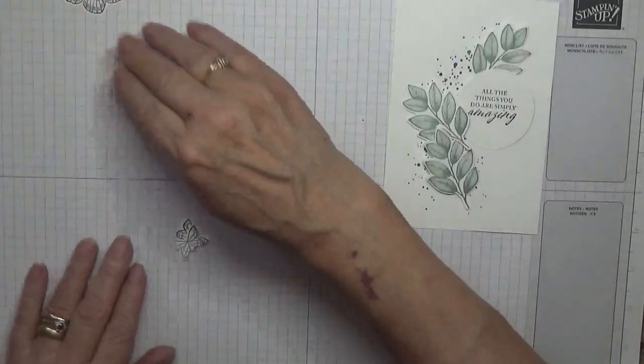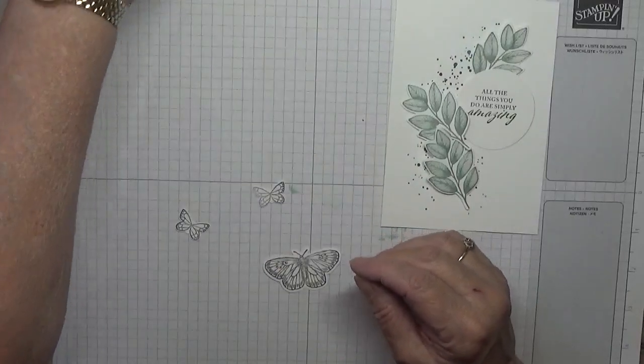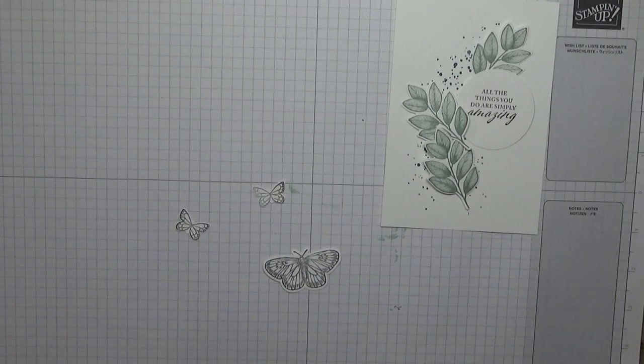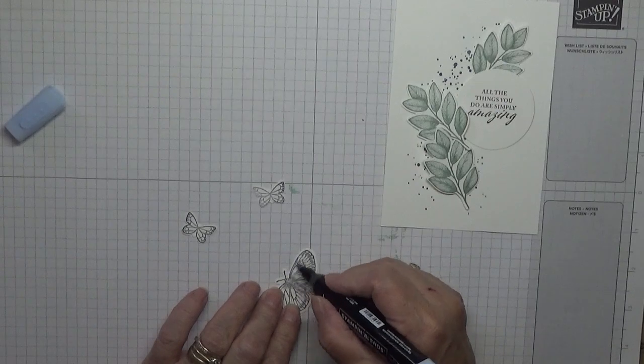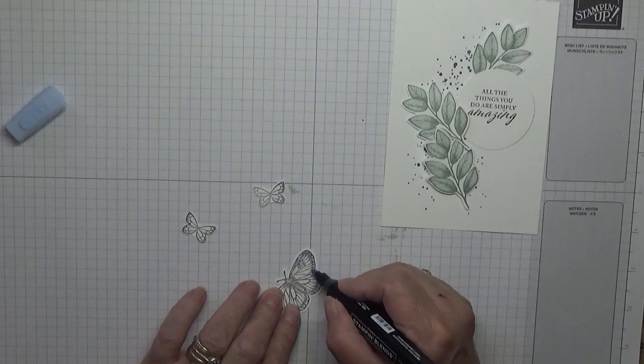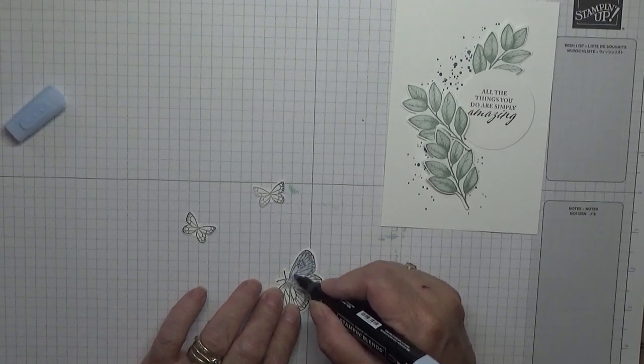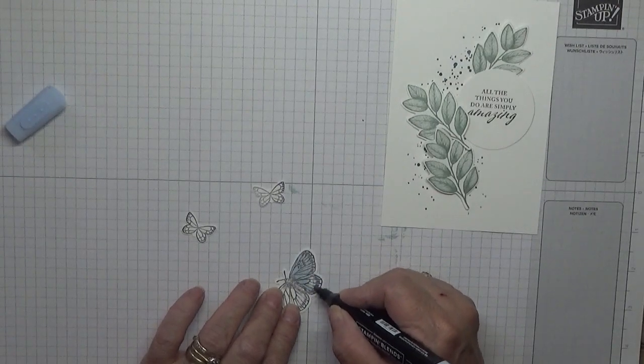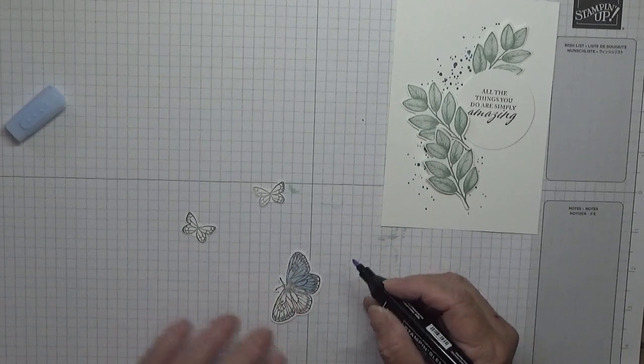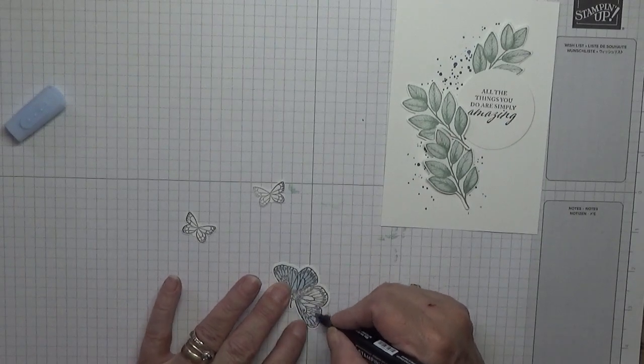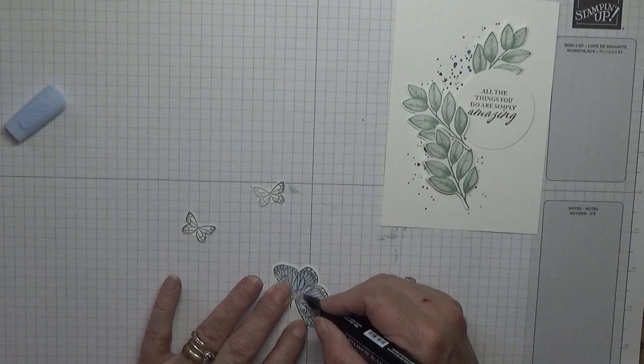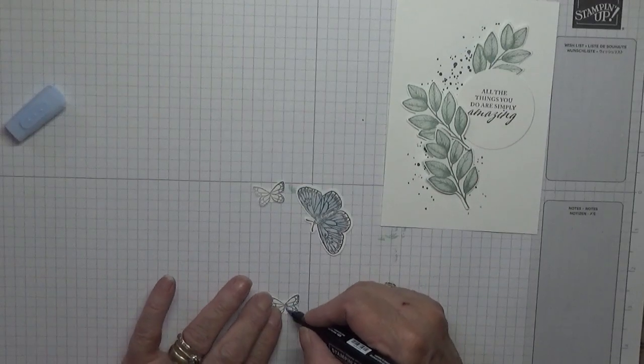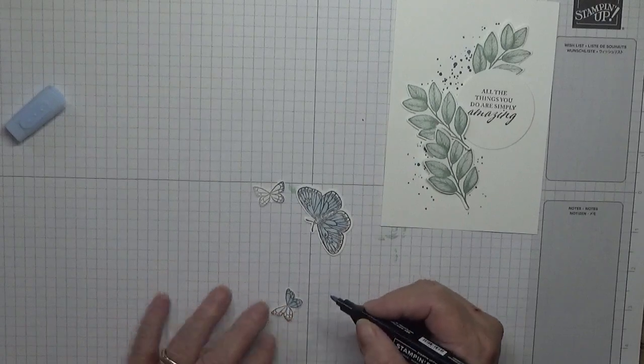So now we've got to color in our butterflies with light Seaside Spray. I'm not too worried about going to the edge because that's going to be Misty Moonlight.